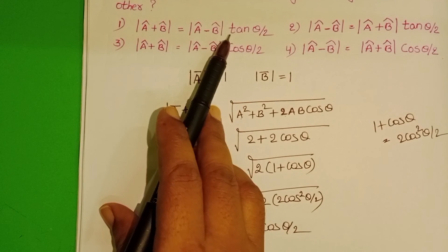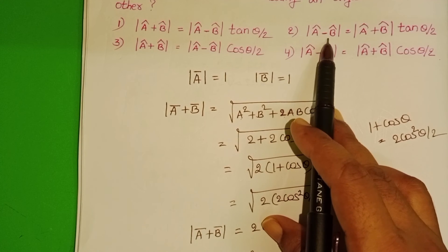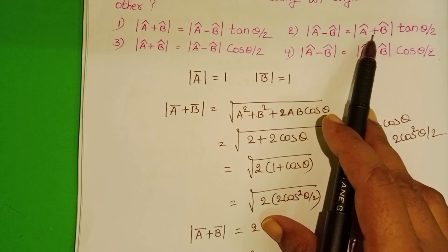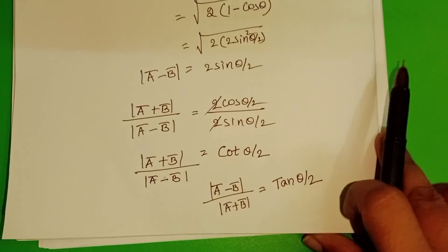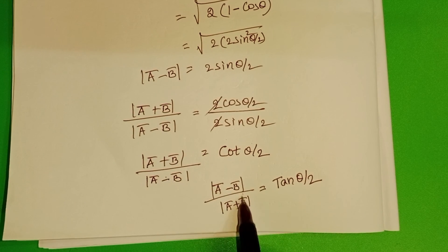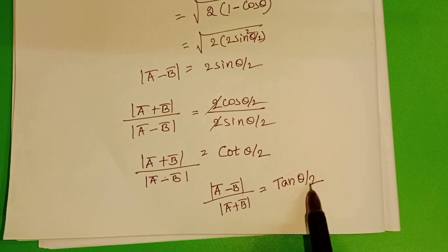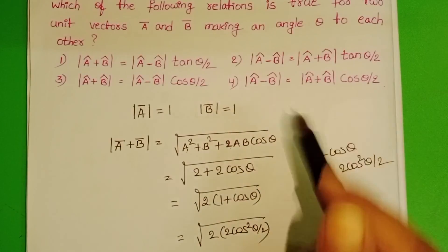The first option is not correct. Checking the second option: mod(a bar minus b bar) equals mod(a bar plus b bar) into tan(theta/2). We get the same answer here as well: mod(a bar minus b bar) equals mod(a bar plus b bar) into tan(theta/2). So the second option is correct.